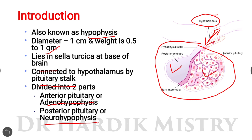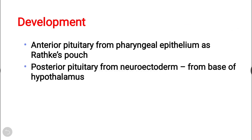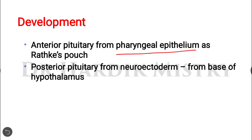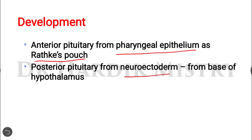Regarding the development of the pituitary gland: the anterior pituitary develops from the pharyngeal epithelium, known as Rathke's pouch, and the posterior pituitary develops from the neuroectoderm at the base of the hypothalamus.